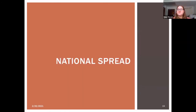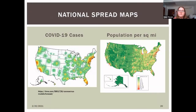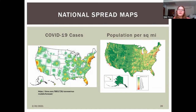The other option users can choose is a national spread displayed within a whole country. Looking at COVID cases in the United States on a broader scale, there's a clear correlation between population per square mile and COVID-19 cases — though this was an early graph when COVID was just beginning to spread in the US.